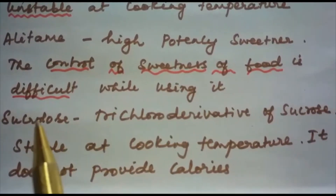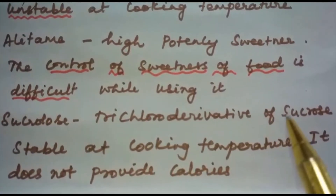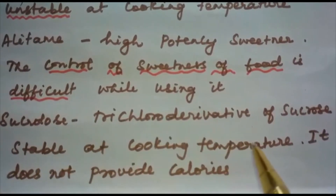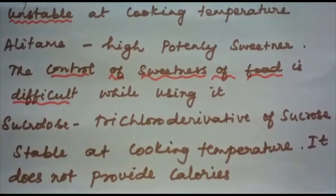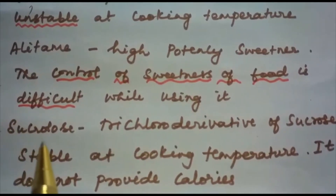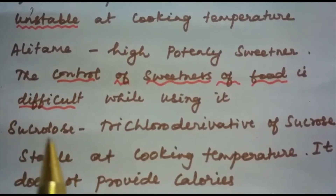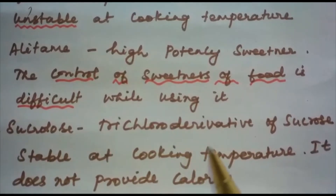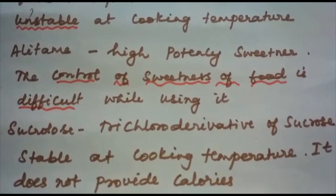Sucralose is a trichloro derivative of sucrose and it is stable at cooking temperature and does not provide calories. The most stable artificial sweetener is sucralose, which is stable at cooking temperature and does not provide calories.